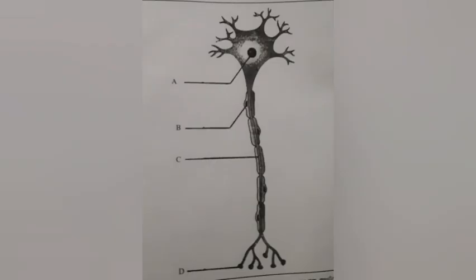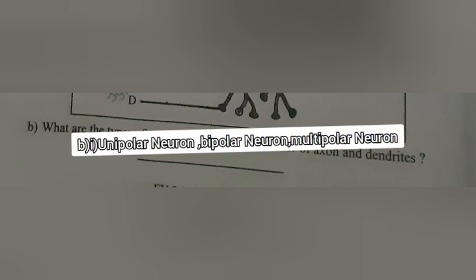Answer. A — Nucleus. B — Schwann cell. C — Axon. D — Synaptic knob. 20B. What are the types of neurons based on the number of axons and dendrites? Answer: Unipolar neuron, Bipolar neuron, Multipolar neuron.